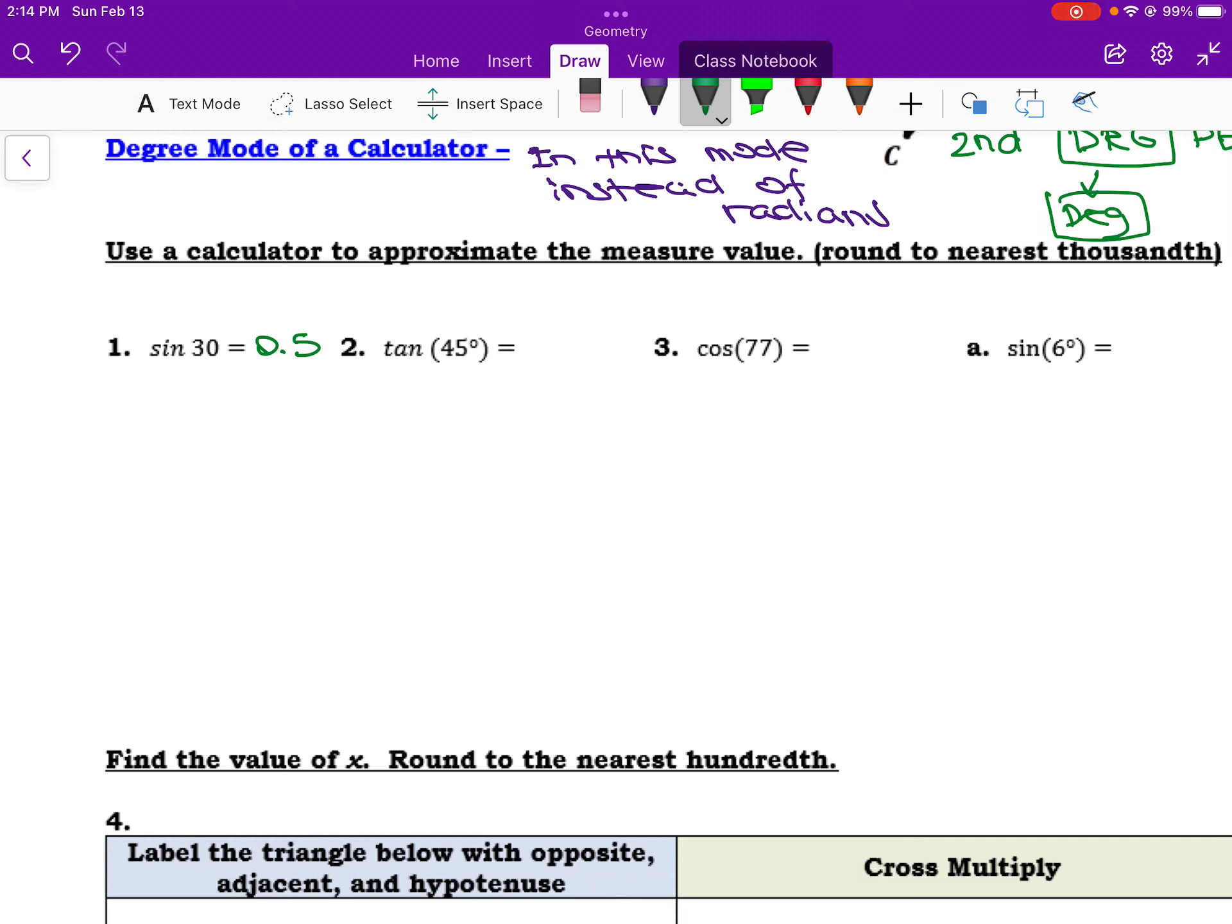Tangent of 45 degrees, again, I'm just hitting the tangent button, typing in 45, hitting enter, and I get 1. For cosine 77, I hit my cosine button, type 77, hit enter, and this one I'm going to have to round. So I have 0.22, and then if I round it up, 5.